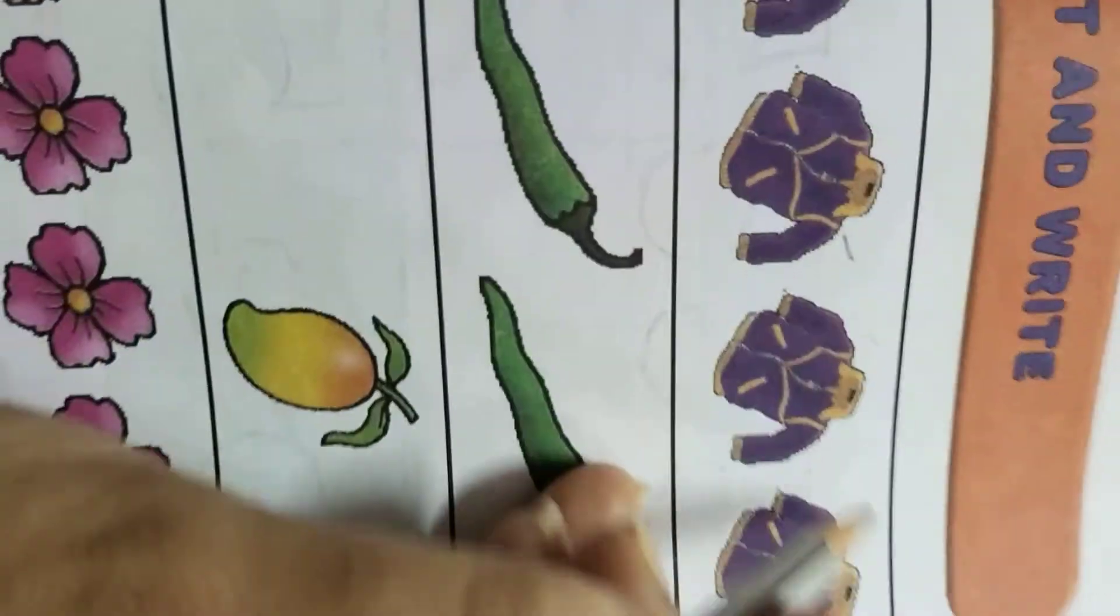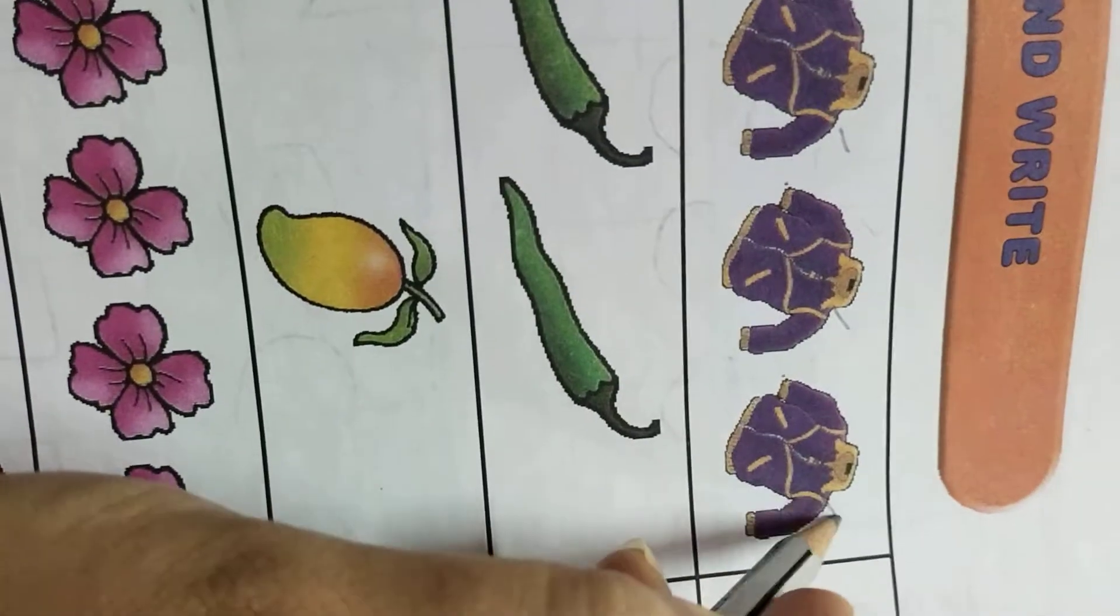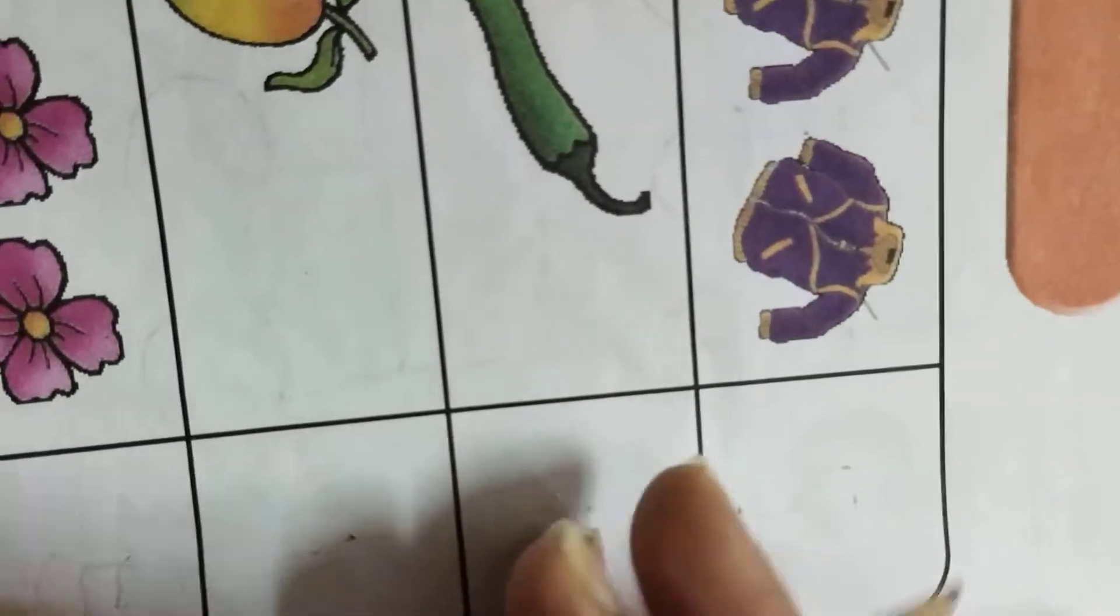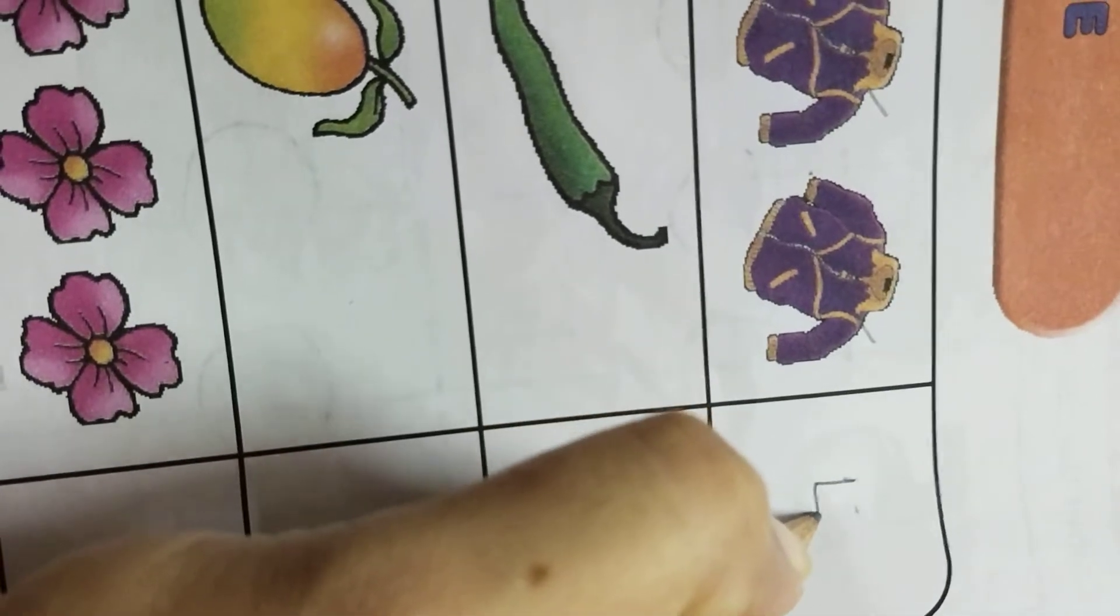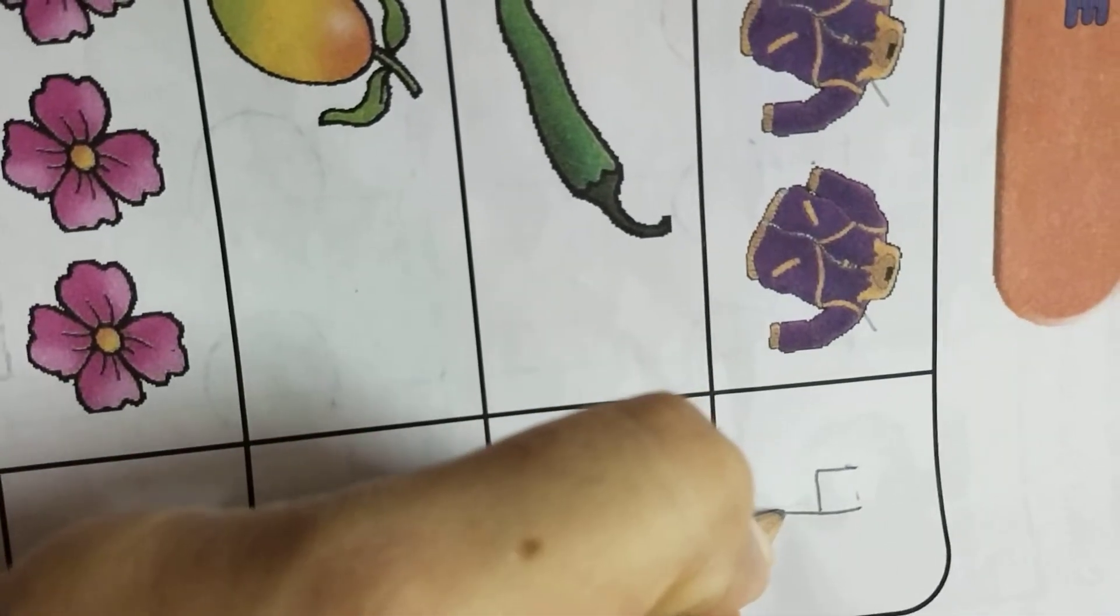One, two, three, four. We will write here number four. Standing line, then slanting, then big standing line.